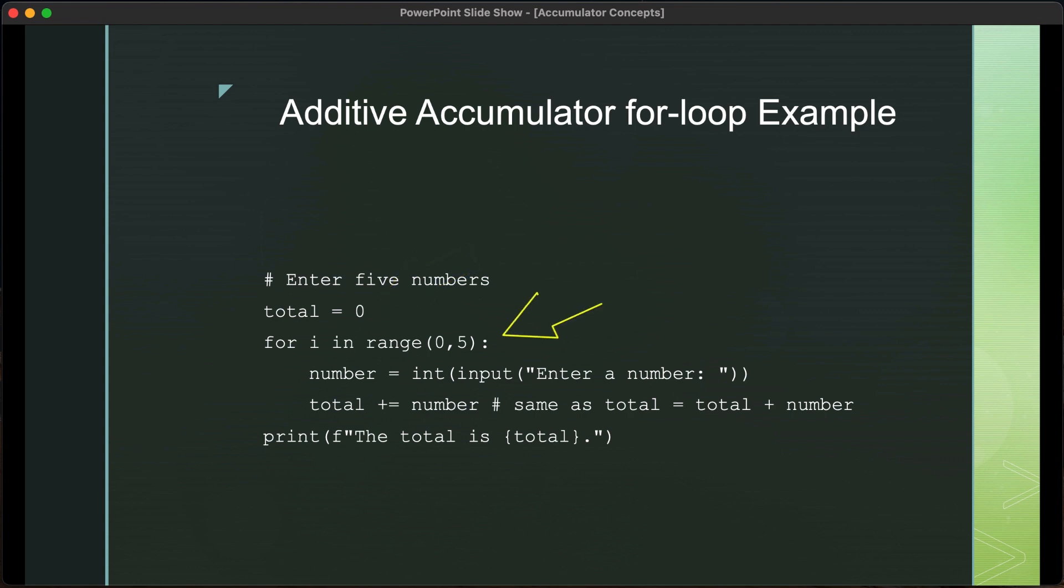Our for loop is then going to iterate five times. It's going to go zero, one, two, three, four. But, remember, it will never get to five. We ask the user to enter a number. We take that number and we aggregate it to total. Remember, total starts at zero. Whatever number the user enters will then be added to total.